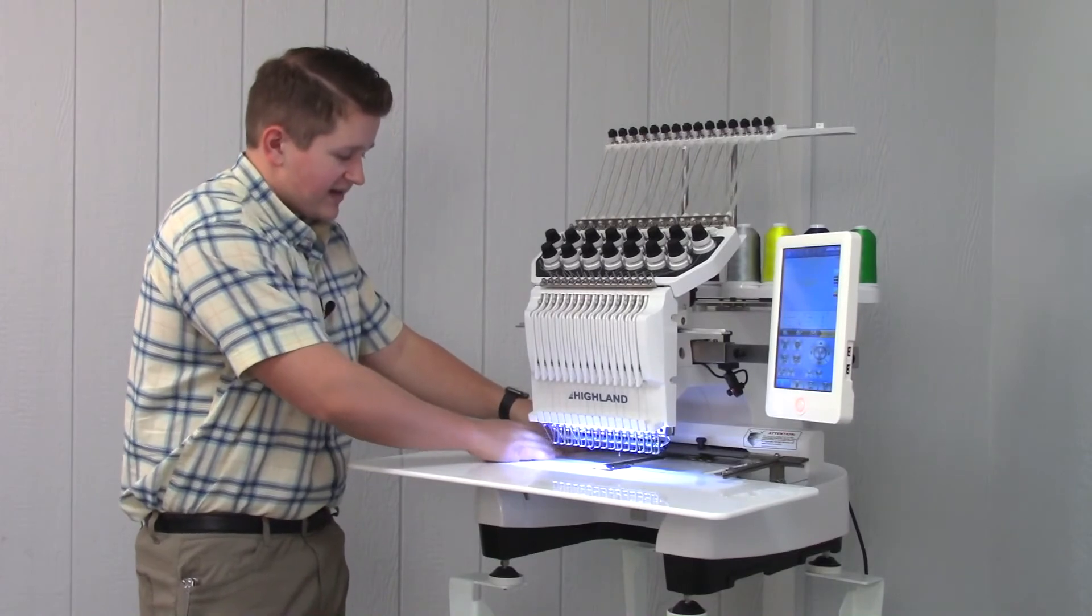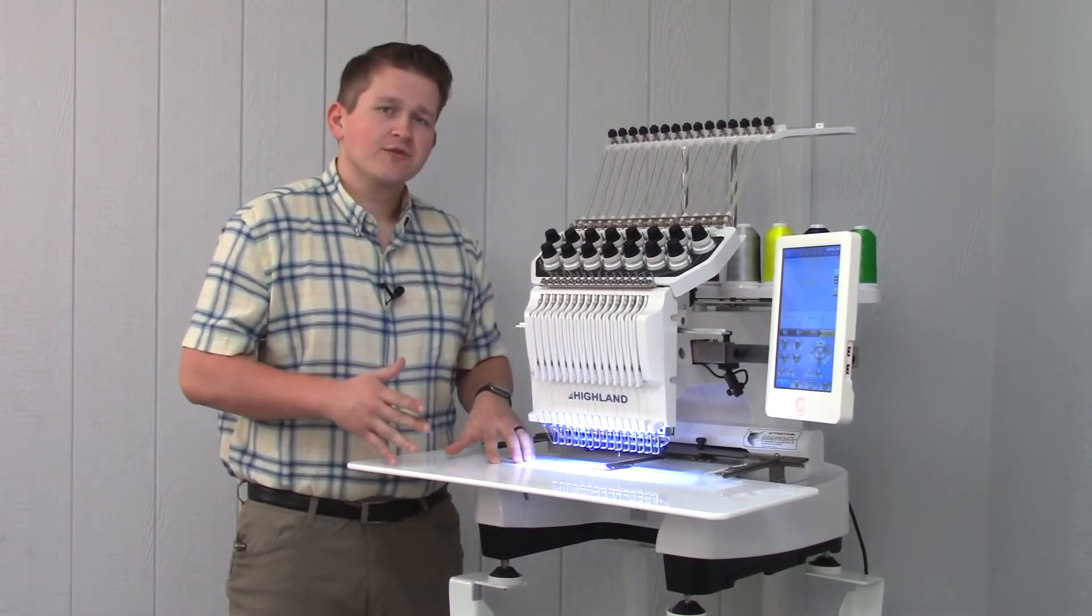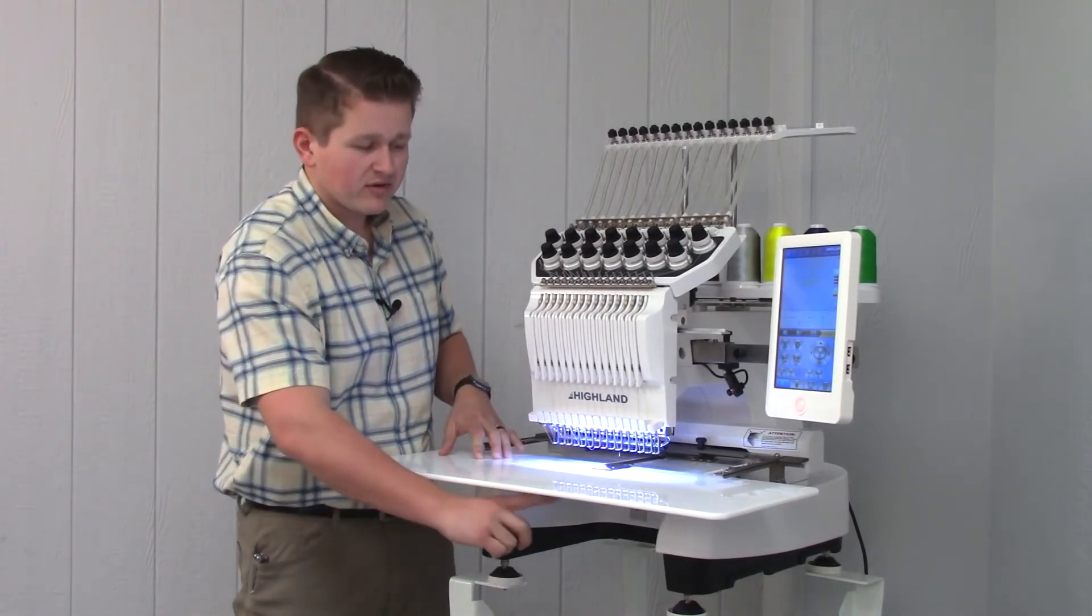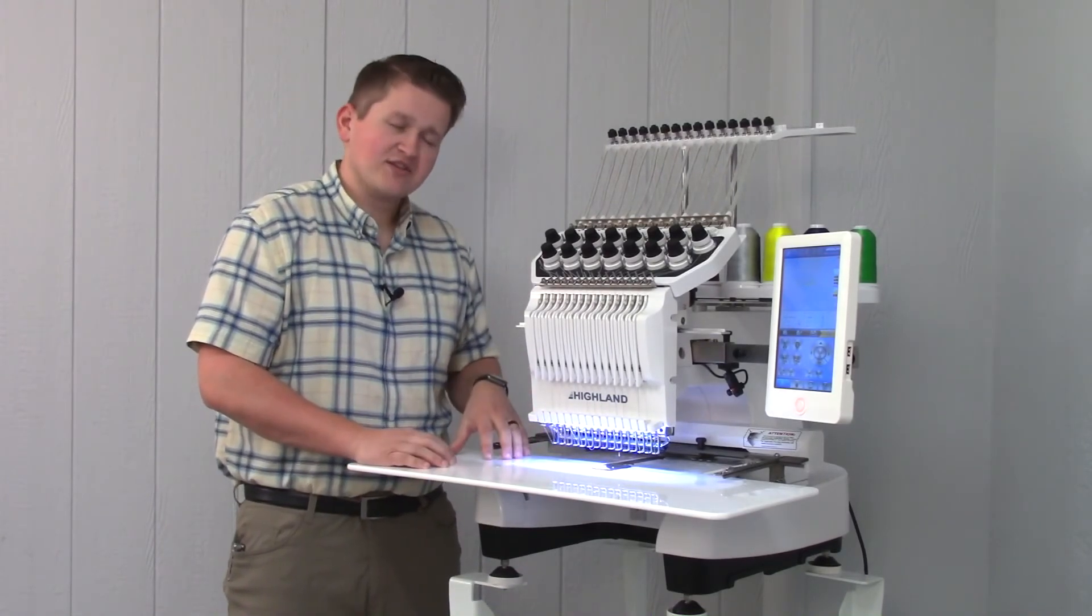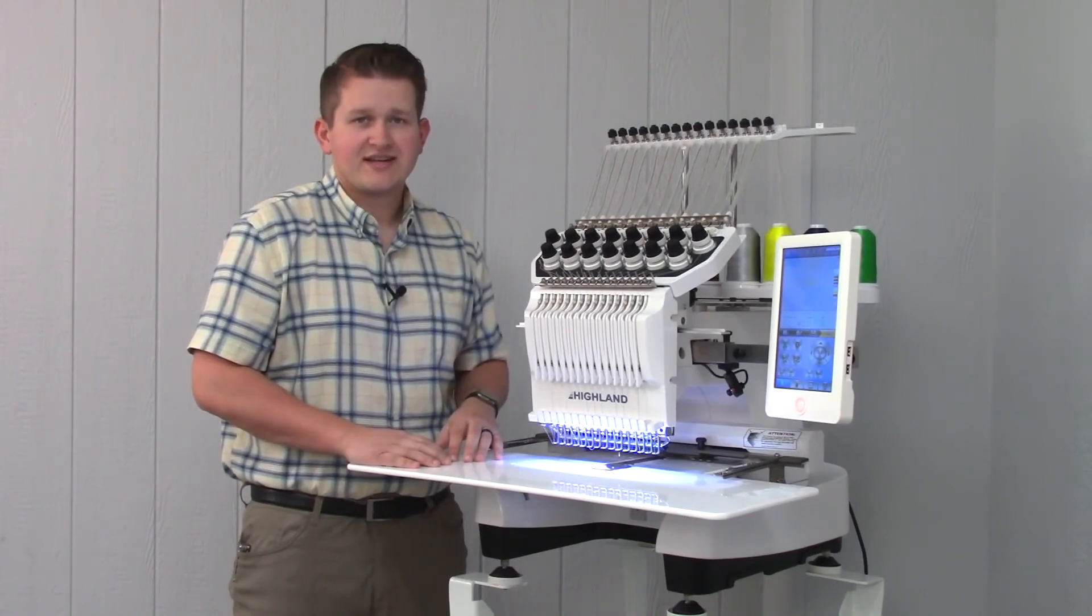Again, just get it nice and hand tight. Once we have both of those screw holes in, your table is secure. You do have the option to put the screws in the two front holes as well, though just having the two will suffice and make your table as secure as it needs to be.